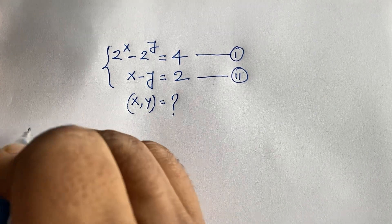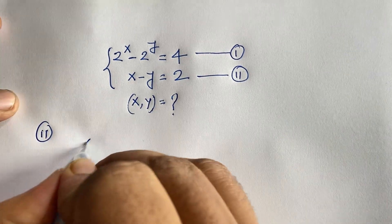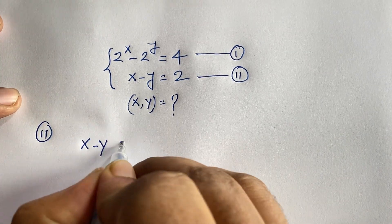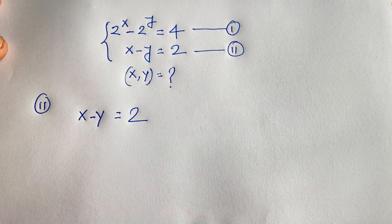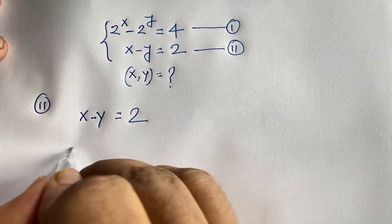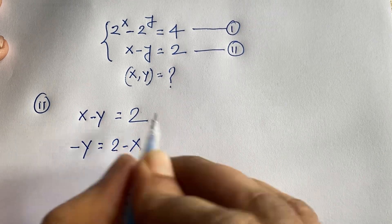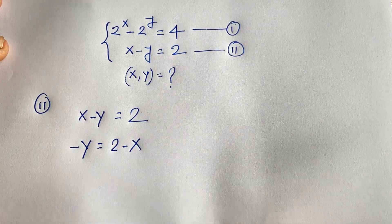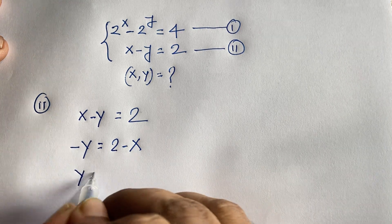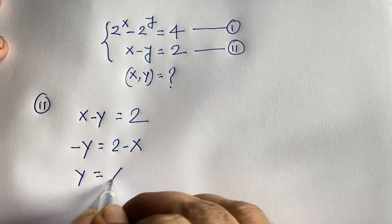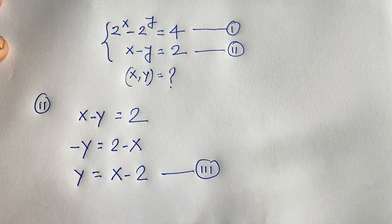Let's start. Our second equation is x minus y is equal to 2. I can rearrange: minus y is equal to 2 minus x. Moving x to the other side gives negative x. If I multiply both sides by minus 1, we find y is equal to x minus 2. This is our third equation.